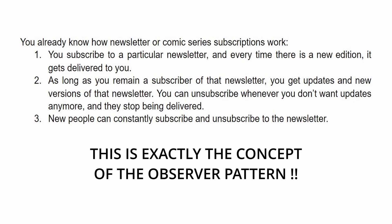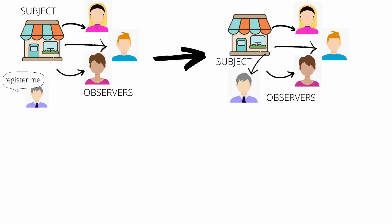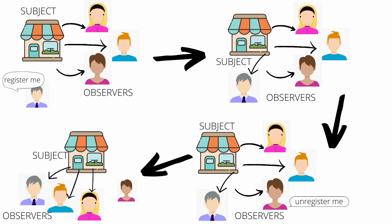A newsletter or comic series subscription is a good way to visualize the pattern. Let's say a customer is very interested in the newest version of a comic series, which should become available in the store very soon. The customer could visit the store every day and check product availability, but while the product has still not arrived, most of these trips would be pointless. Using the observer pattern, we can define a subscription mechanism where customers can subscribe and whenever the product is available, they will get notified. When they are not interested in the product anymore, they can unsubscribe to avoid spam, and once they unsubscribe, they won't be notified anymore.